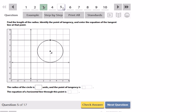Find the length of the radius and identify the point of tangency and enter the equation of the tangent line. So here we could use distance formula but there's really no need to since the point of tangency is vertically above the center. I can just count and say that the radius here is going to be two units. The point of tangency is at 3 comma 4 and any horizontal line has the equation y equals and wherever that's crossing the y axis which is at 4.